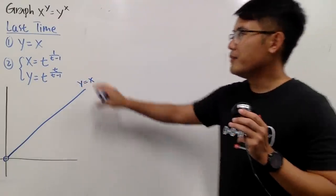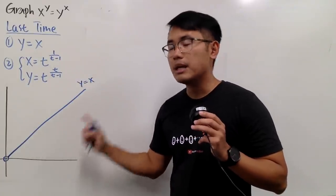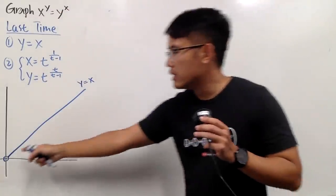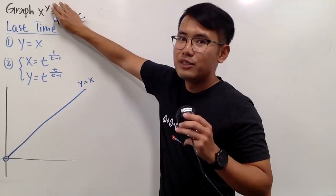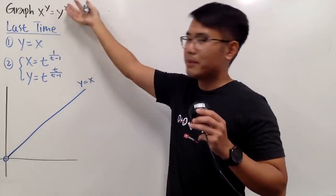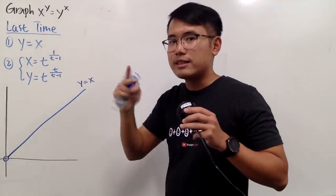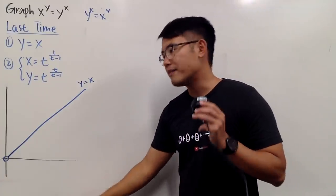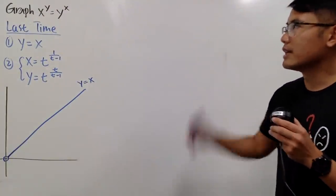Before I graph the parametric part, we should discuss that the y=x line is actually going to help us, because the graph of this equation is symmetrical about this line. Why? Just refer back: if you change x and y, you get back to the original equation. In other words, if you look at this equation and switch x and y, you end up with y to the x power equals x to the y's power. So of course the graph is symmetrical about y equals x.